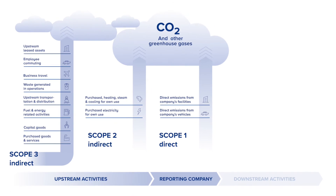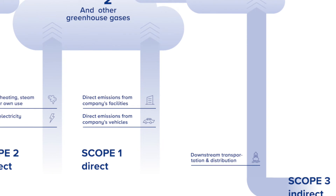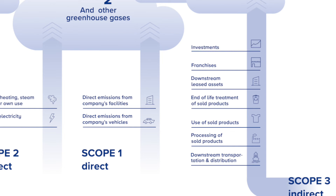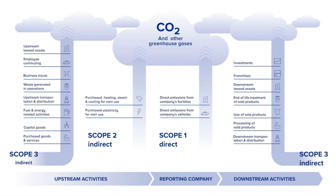Downstream emissions are related to sold goods and services and emitted after they leave the company's ownership or control. Downstream emissions fall under seven categories: Downstream transportation and distribution, the processing and use of sold products, end-of-life treatment, downstream leased assets, franchises, and investments. An experienced partner can help you develop a full corporate greenhouse gas emissions inventory that includes Scopes 1, 2, and 3.